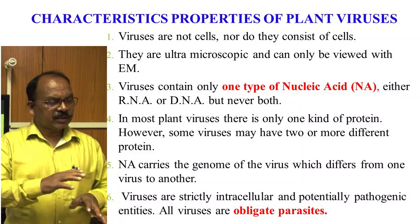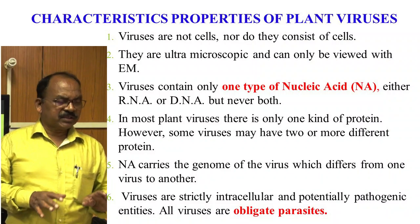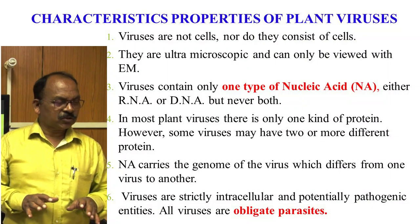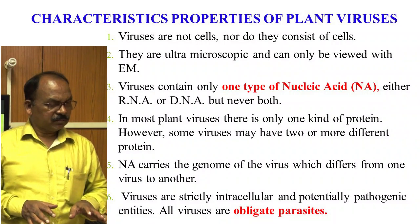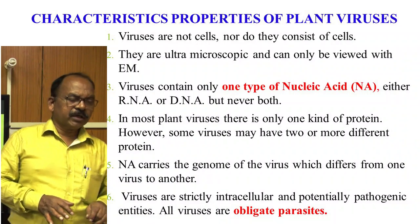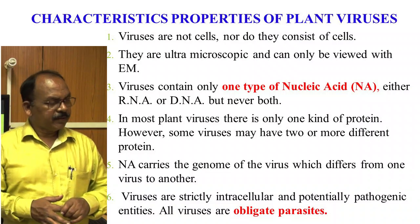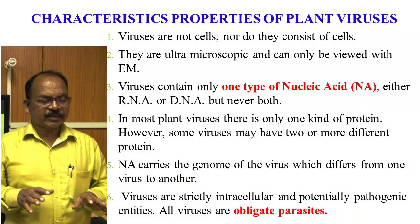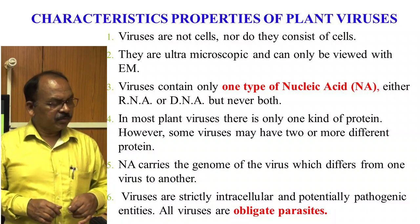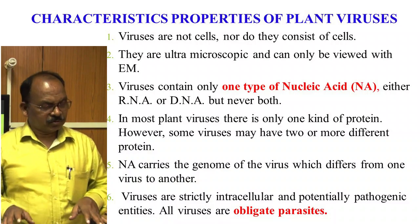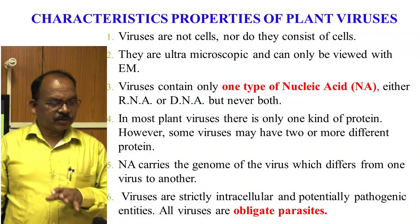What are the characteristic features of plant viruses? Viruses are not cells, nor do they consist of cells. They are ultra-microscopic and can only be viewed with an electron microscope. Viruses contain only one type of nucleic acid, either RNA or DNA, but never both. In most plant viruses, there is only one kind of protein; however, some viruses may have two or more different proteins.